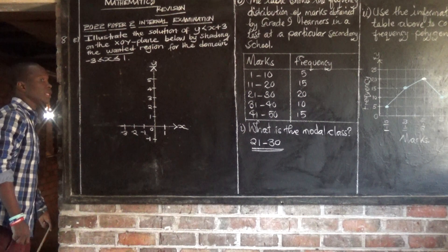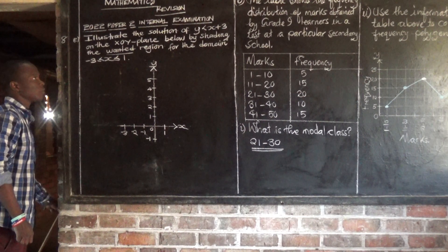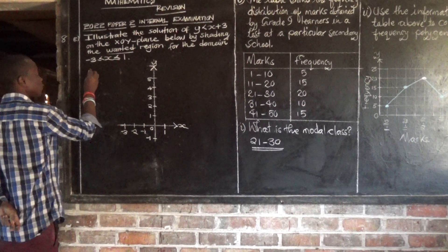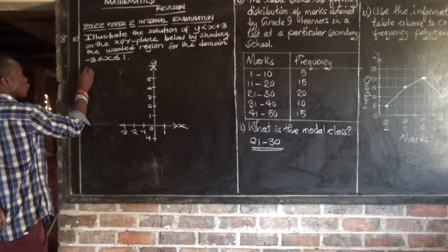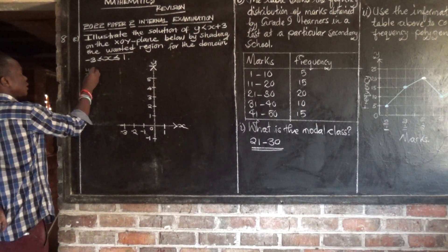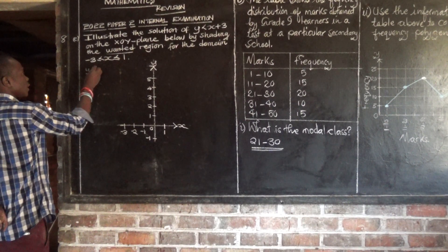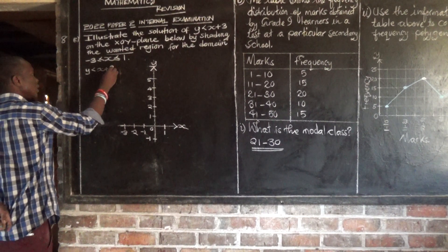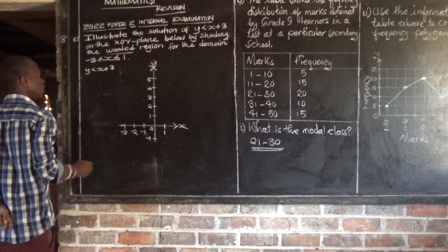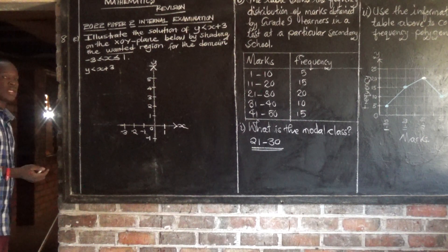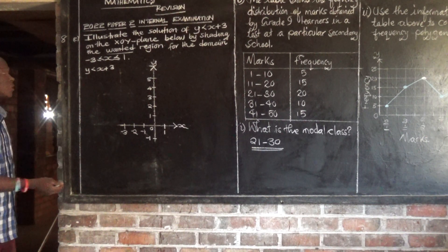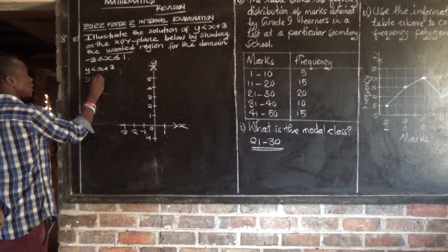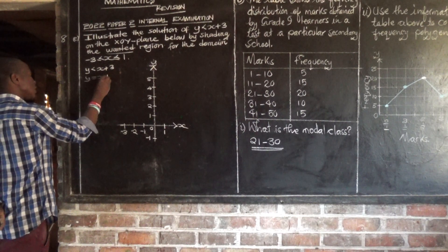We have been given an inequality, which is y is less than x plus 3. Step number 1, what we are going to do is first write this as an equation and say y equals x plus 3.